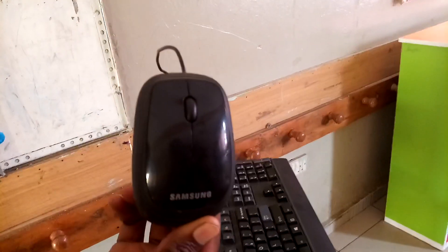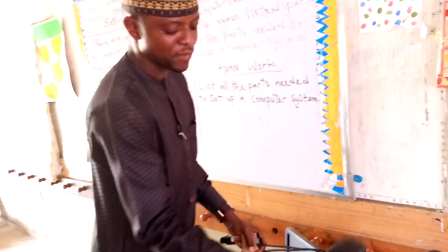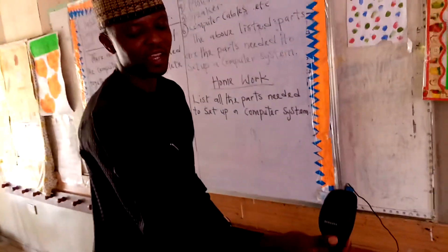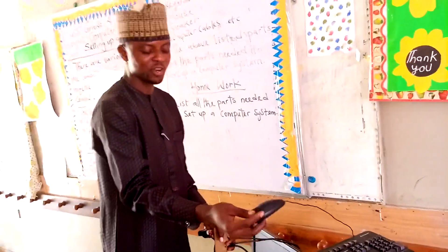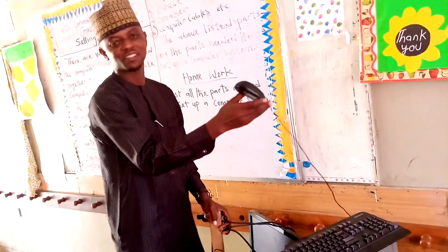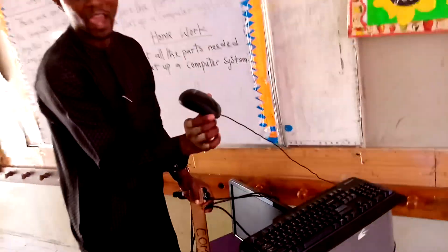We also have the computer mouse, which is what I'm holding here. It is called a mouse, just like the mouse animal in our houses. If you look at it, this is the body and this is the tail — that tail makes it look like the animal. But this is a device used to issue commands to the computer system.